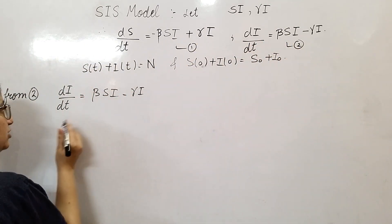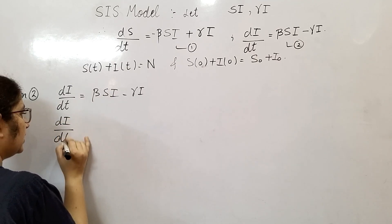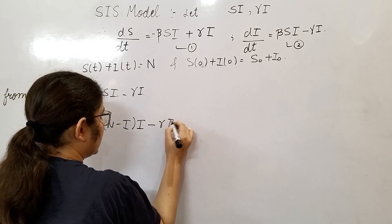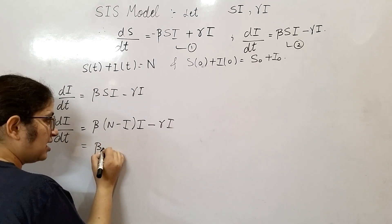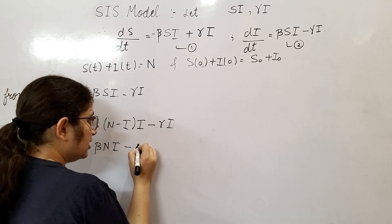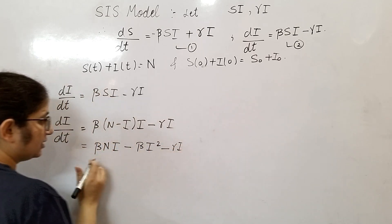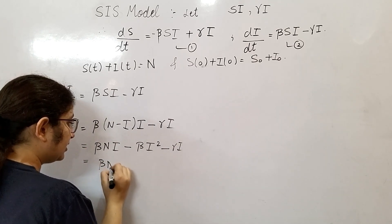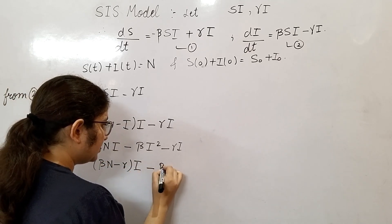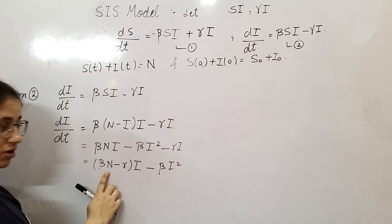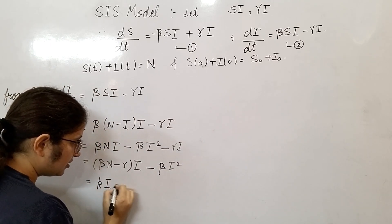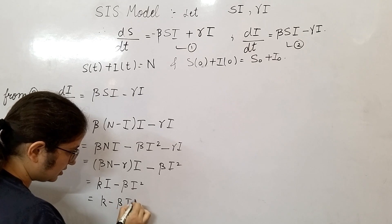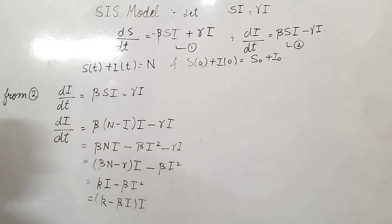From the substitution, S = N - I, so dI/dt = beta*(N - I)*I - gamma*I, which expands to beta*N*I - beta*I² - gamma*I. Rearranging: dI/dt = (beta*N - gamma)*I - beta*I². Let K = beta*N - gamma, so dI/dt = K*I - beta*I².